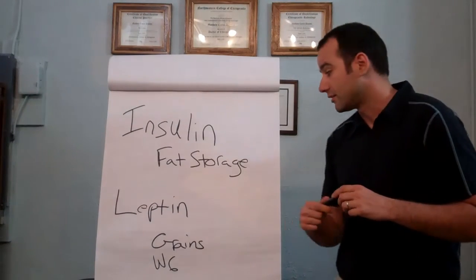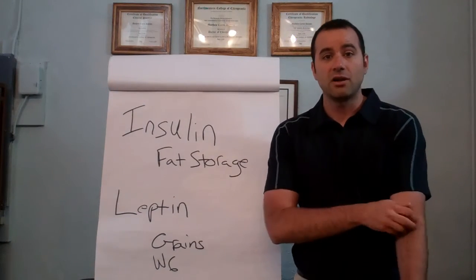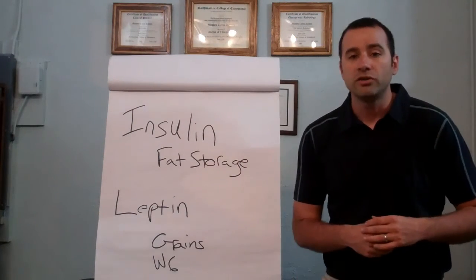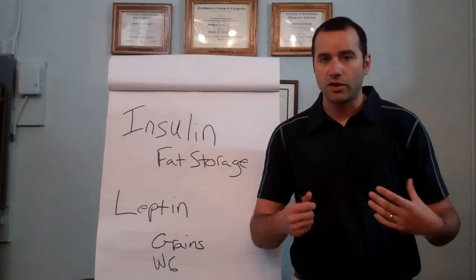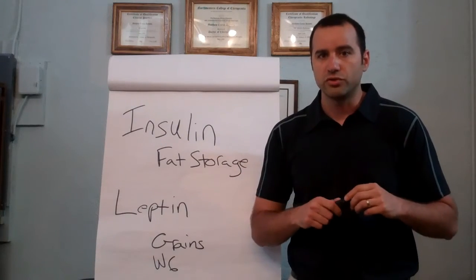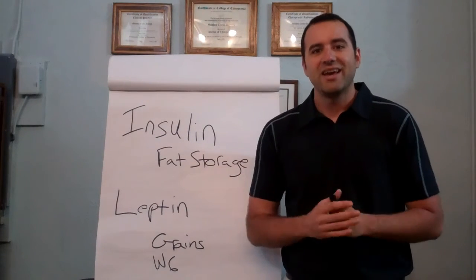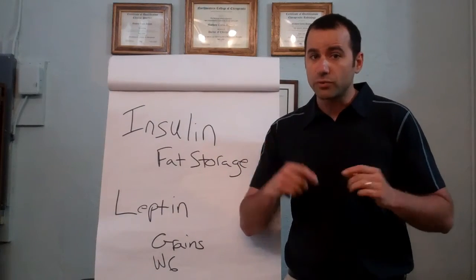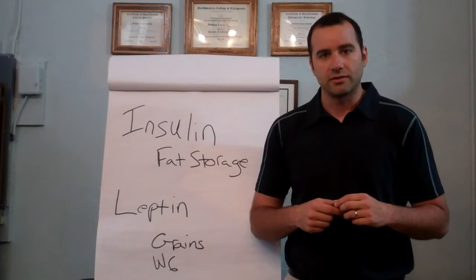Next one we're going to talk about is leptin. Leptin also mediates the amount of fat we have stored in our body. What we don't want to be is leptin resistant. If you can remember from the PowerPoint, we showed you two mice. One was chubby and one was skinny. Genetically they are identical. The only difference was one was leptin resistant and the other one wasn't.